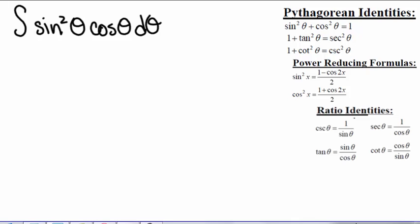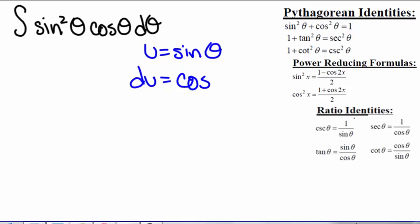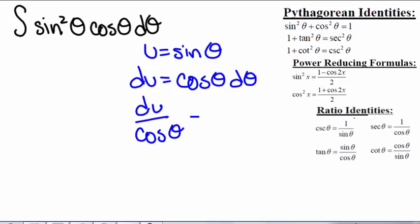But what happens if we let u equal sine of theta? Then we have du equals cosine of theta d theta, so du divided by cosine of theta equals d theta.